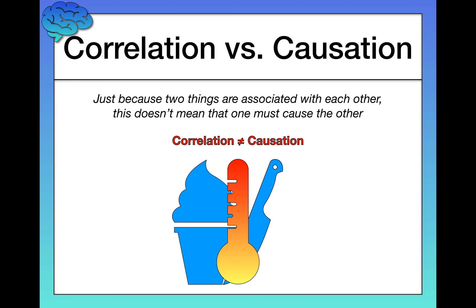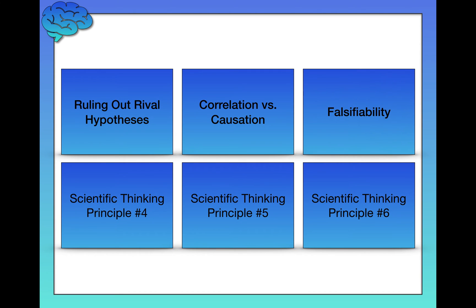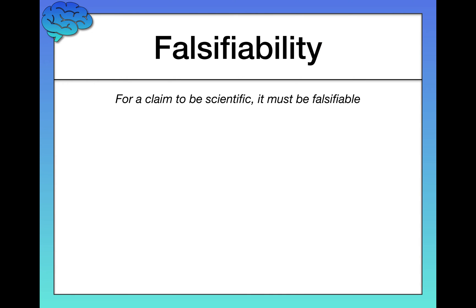Correlation between these two variables does not necessarily imply causation. On to principle number three: falsifiability. This principle states that for a claim to be scientific, it must be falsifiable. Notice I'm not saying the claim must be false — the claim might be true or it might be false. The key is that we need to be able to devise a study to test the validity of the claim. If we can't devise a study to test it, it's not a scientific claim.